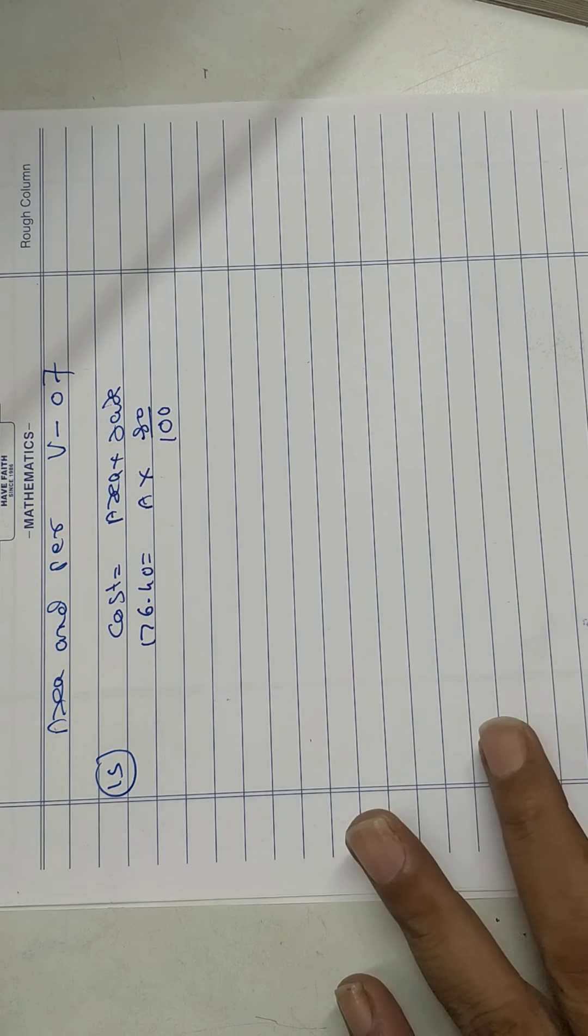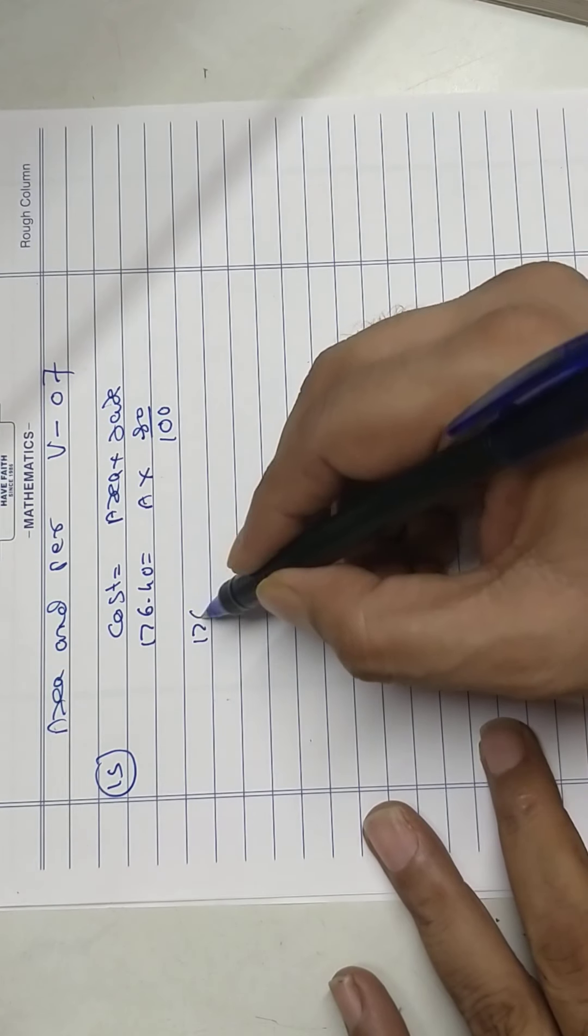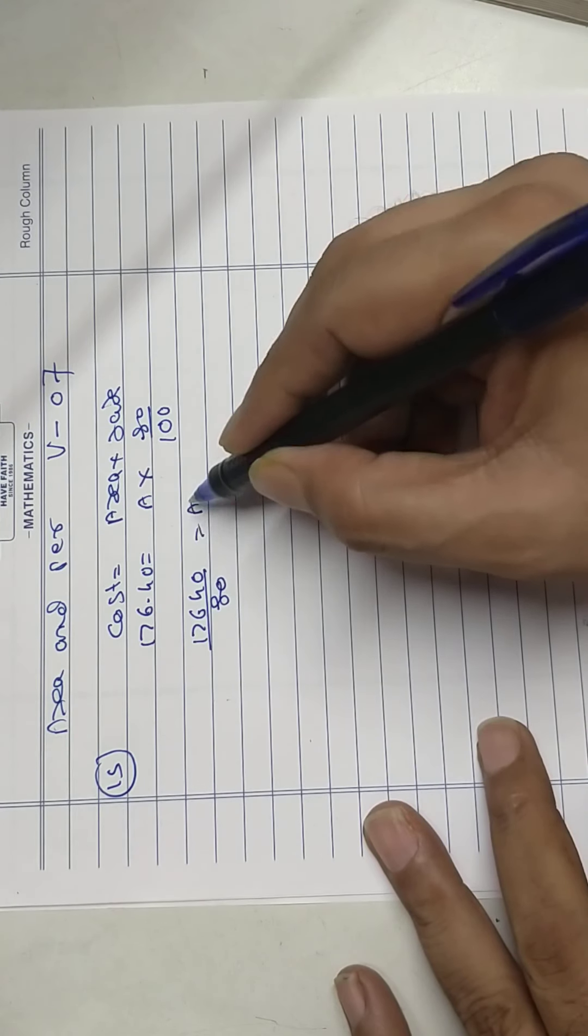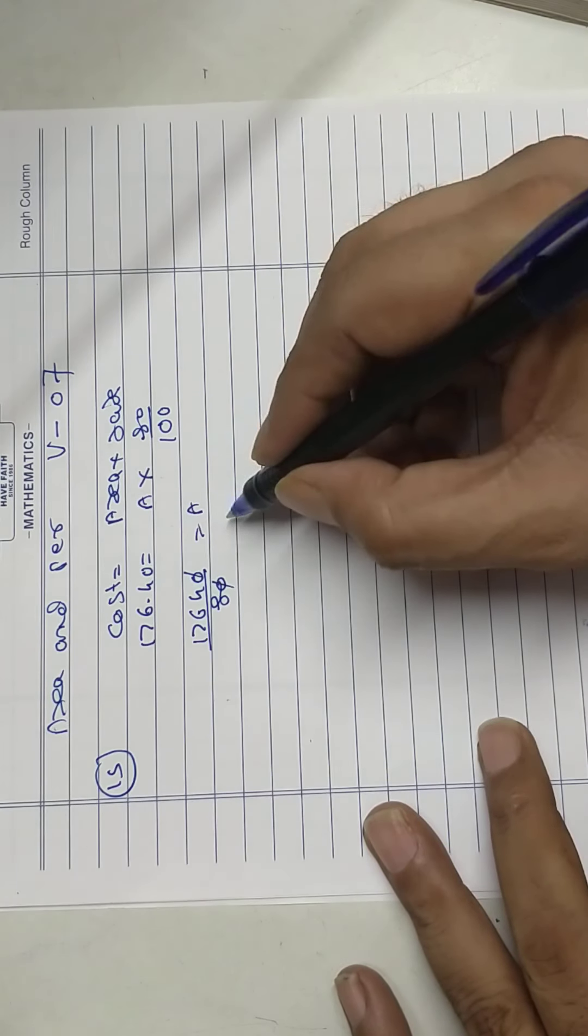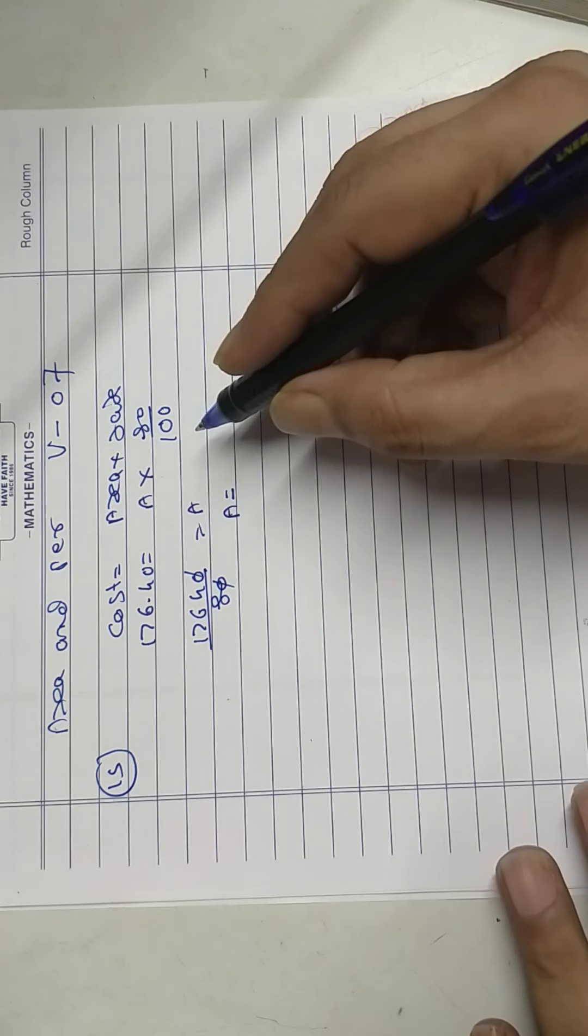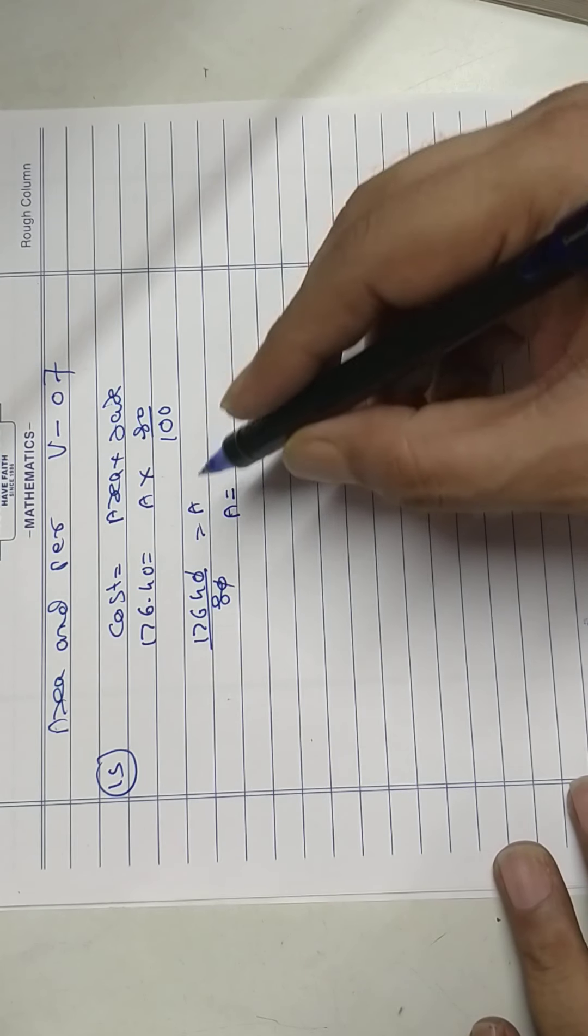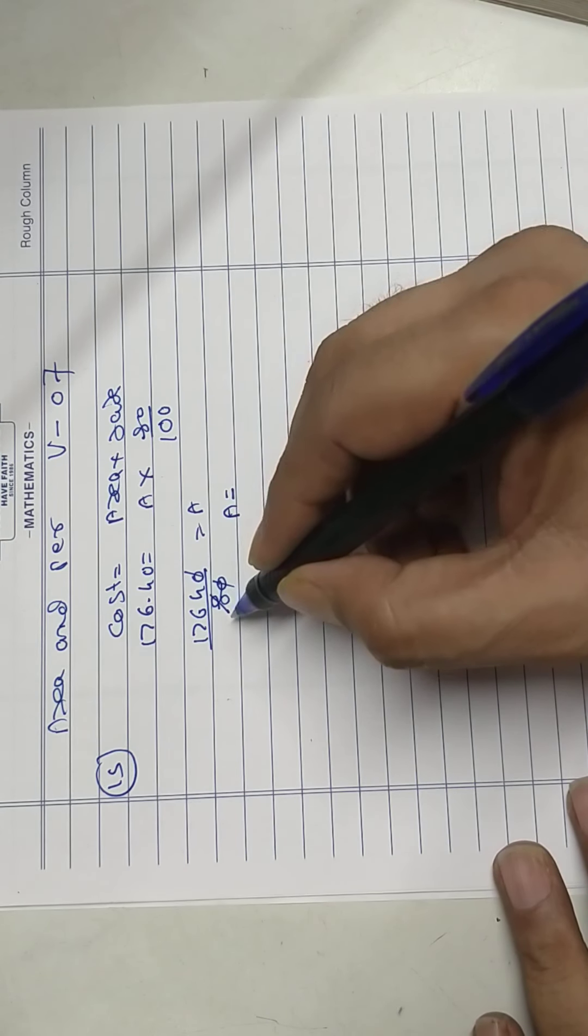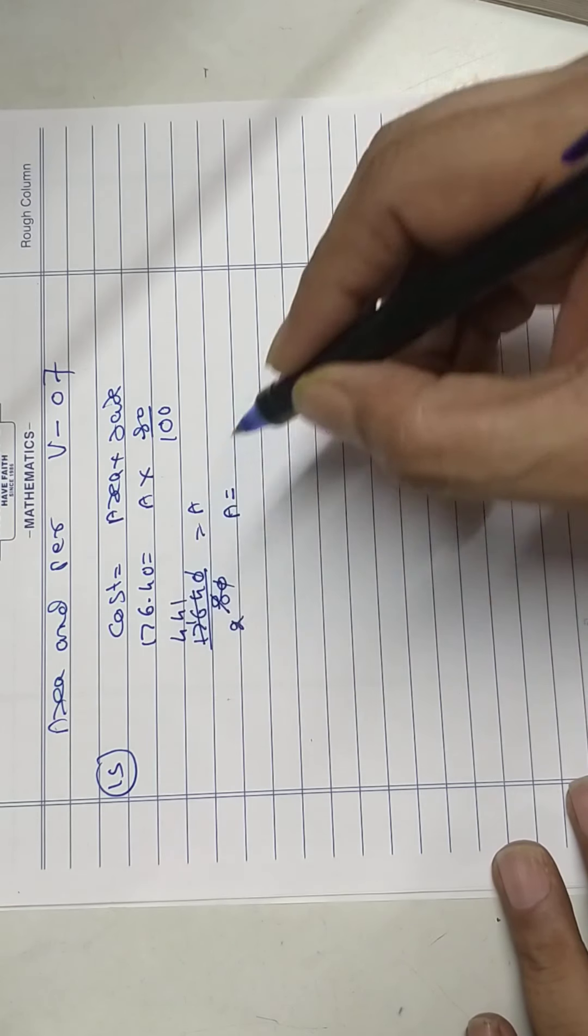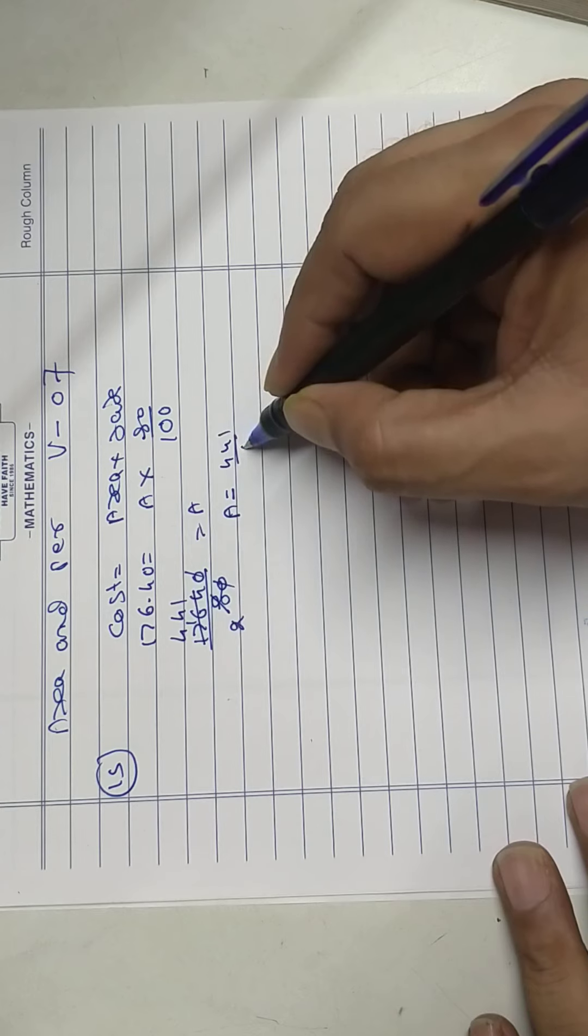Because the paisa can change, 17640 upon 80 equals area. Cancel. Area equals 141 upon 4.